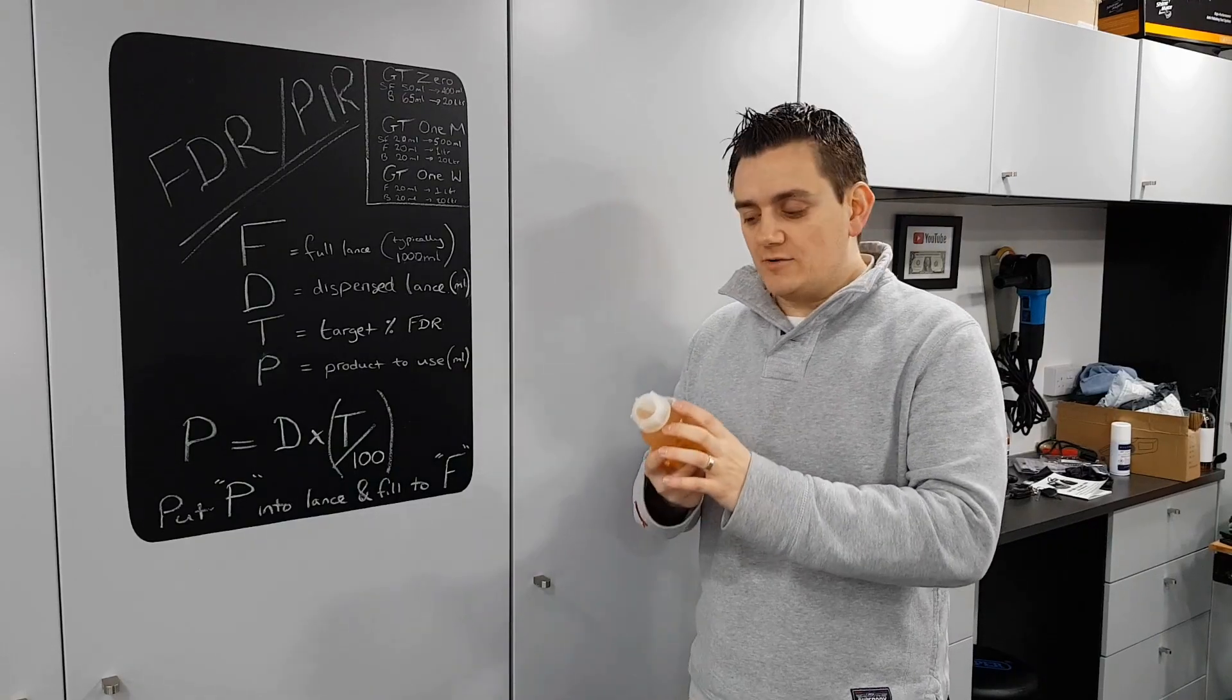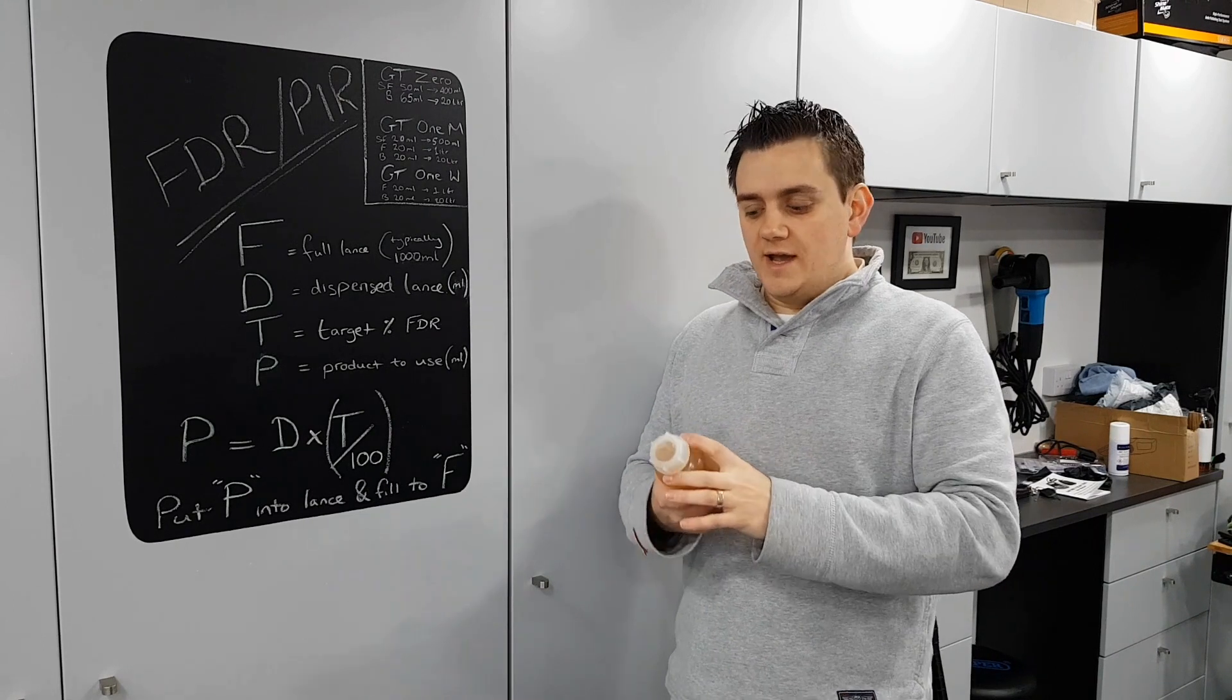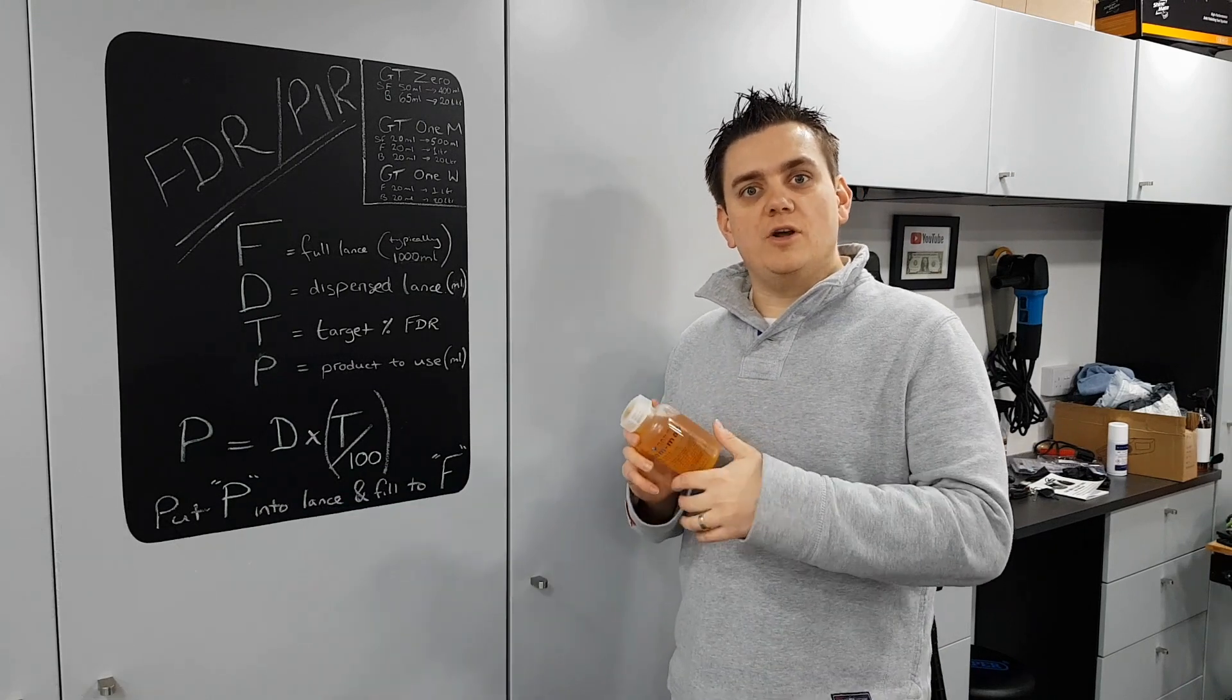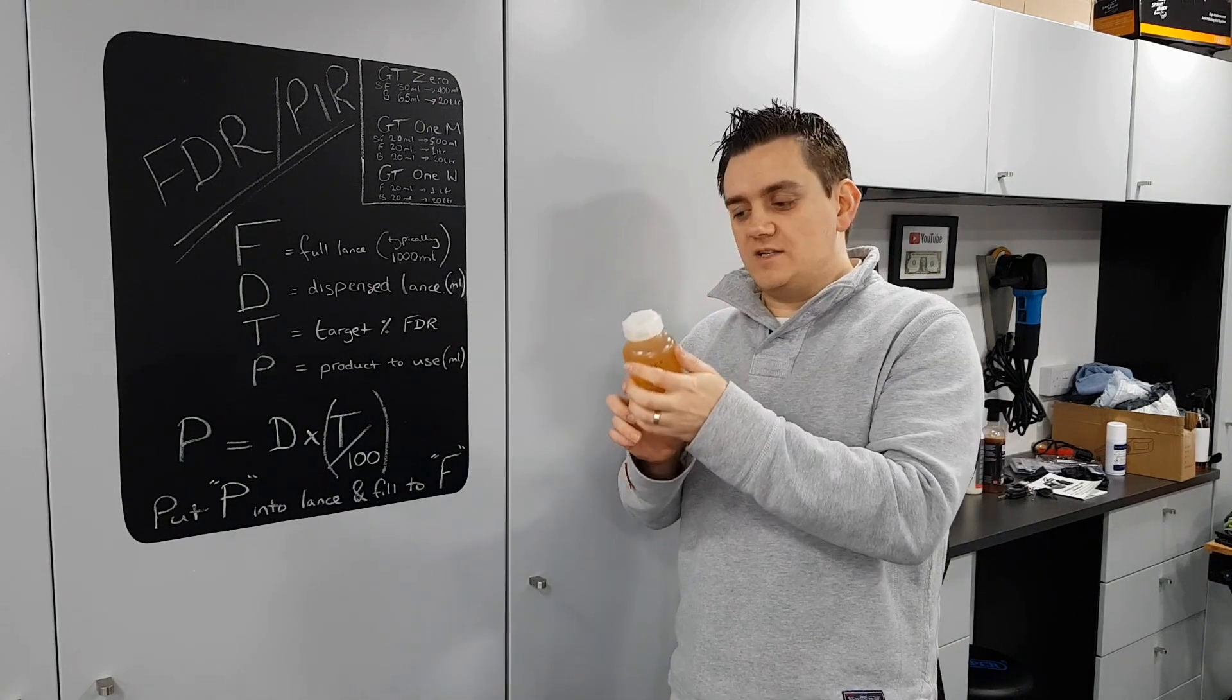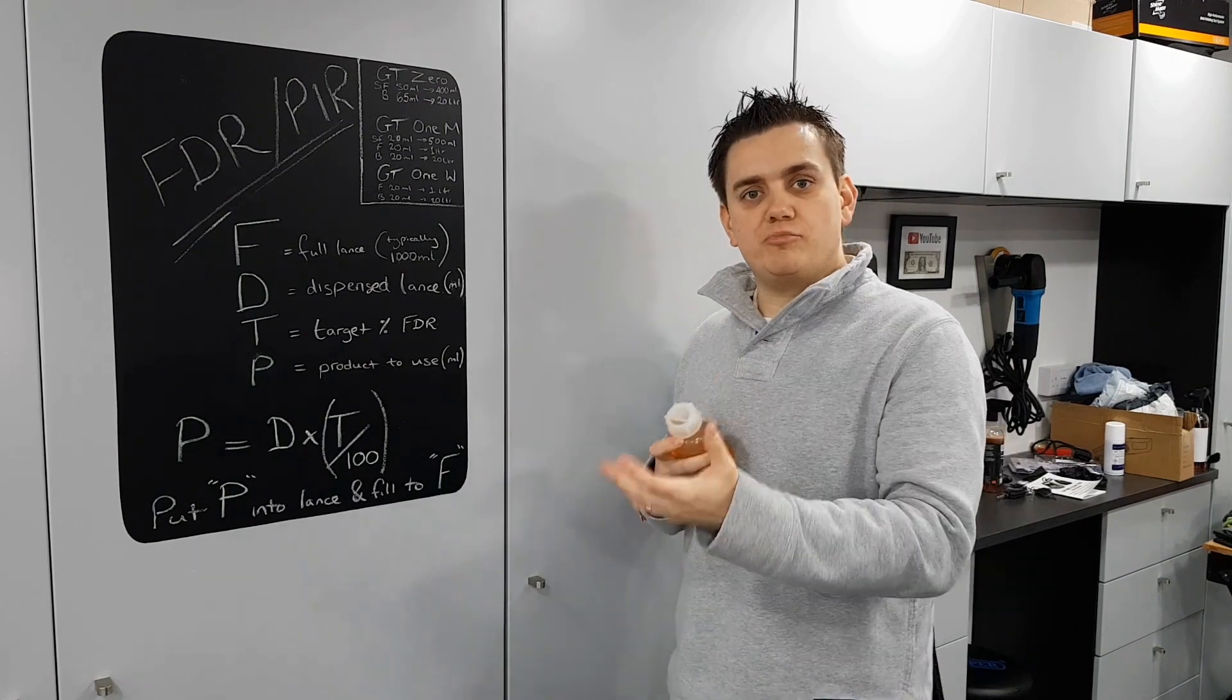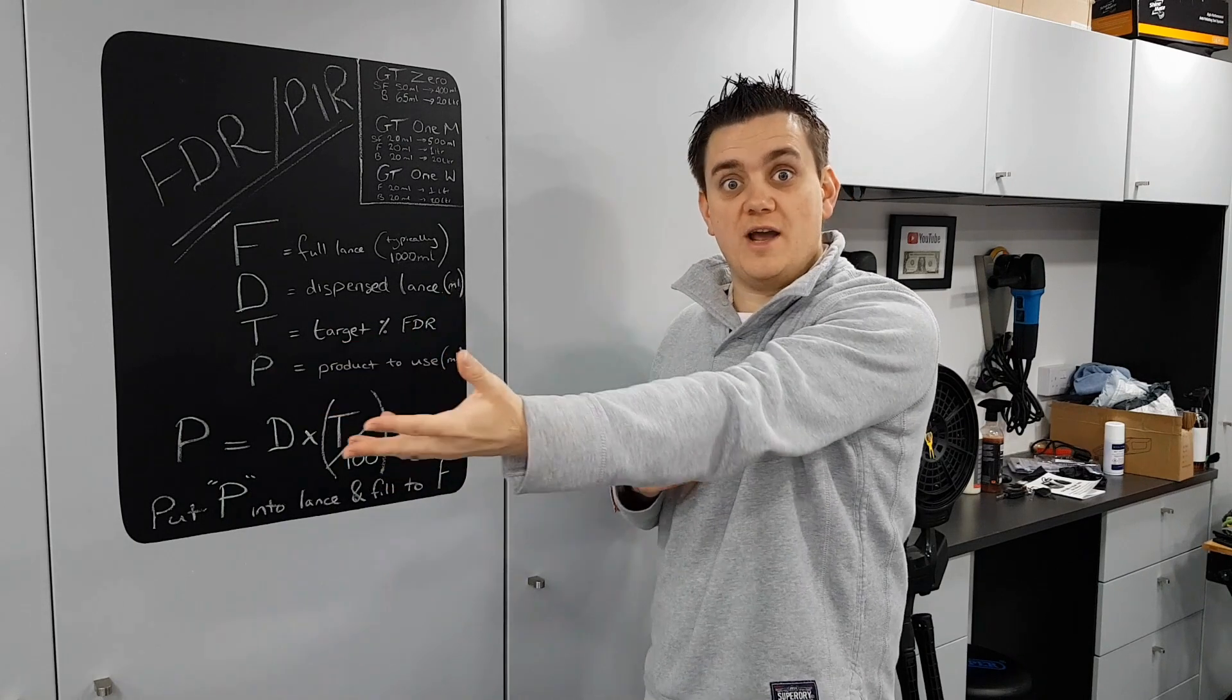This came about because I was doing my undercarriage cleaning video using Bilt Hamber Atom Mac. I know Bilt Hamber on their Auto Foam also gives you a target FDR or PIR. On Atom Mac, they're targeting me to get somewhere between three and five percent FDR. Now that is the ratio of product to water that's coming out of the end of the final piece of the jet wash.